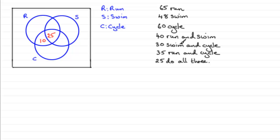Working back up again, we've got 30 that swim and cycle. So the same argument applies here. Don't put 30 in here. These two have got to add up to 30, so that means 5 go there.